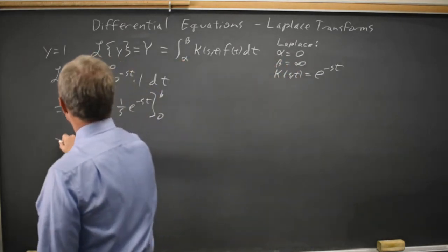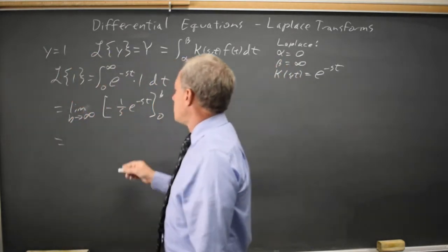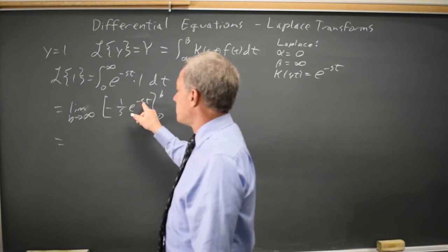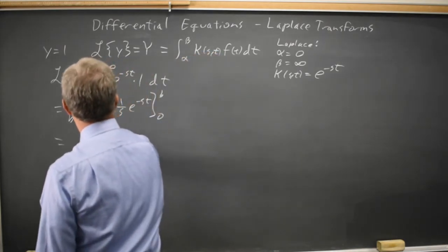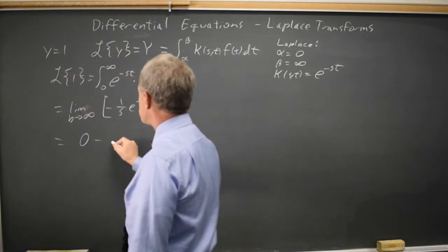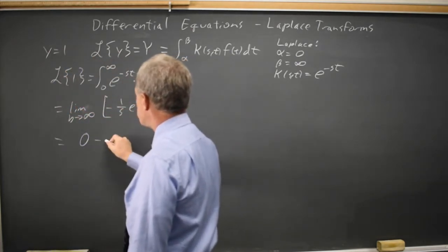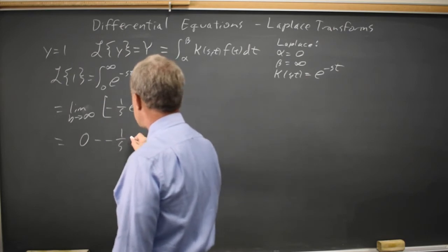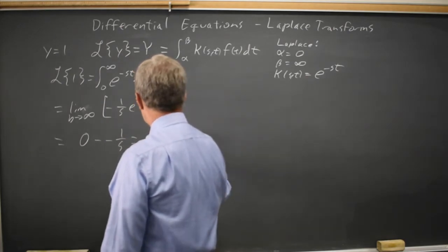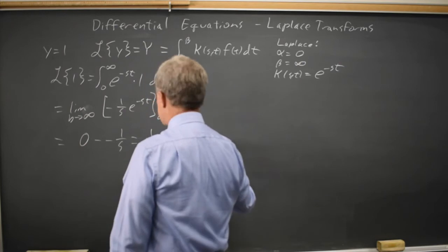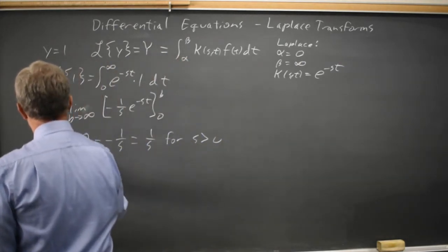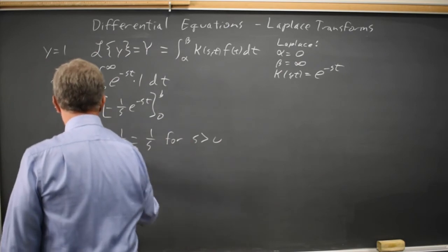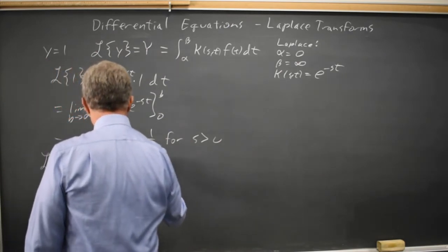So this is, as b goes to infinity, e to the minus s b goes to 0 if s is positive, and anything to the 0 is 1, so it's 1 over s times 1 is minus 1 over s for s greater than 0. So the transform of 1 equals 1 over s for s greater than 0.